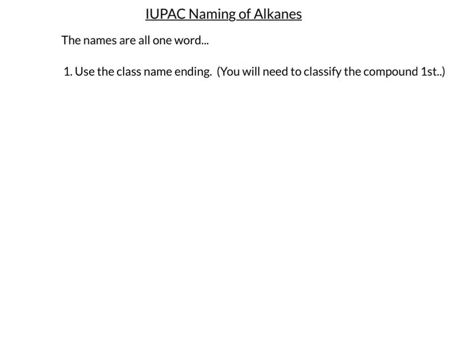The first step in all of our naming processes will be to find the functional group, which will identify the class of compound. In this case, our class of compound is alkane. There is no functional group, but since it's an alkane, the ending will be -ane.